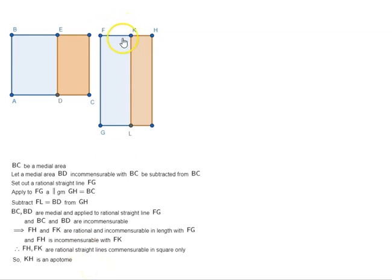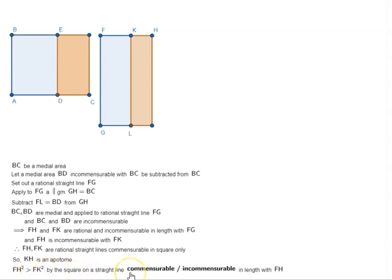Now, FH squared is greater than FK squared by the square on a straight line either commensurable or incommensurable in length with FH. This means we have two possibilities to consider, so let's take them one by one.